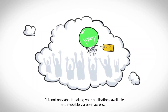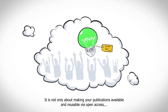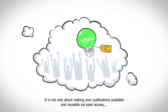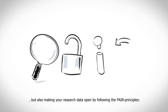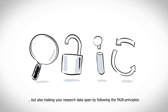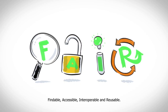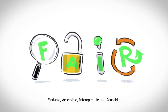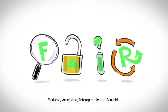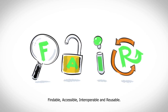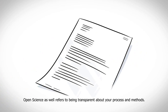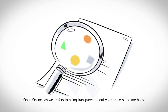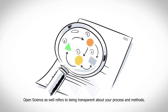Open science is not only about making your publications available and reusable via open access, but also making your research data open by following the FAIR principles: Findable, Accessible, Interoperable, and Reusable.